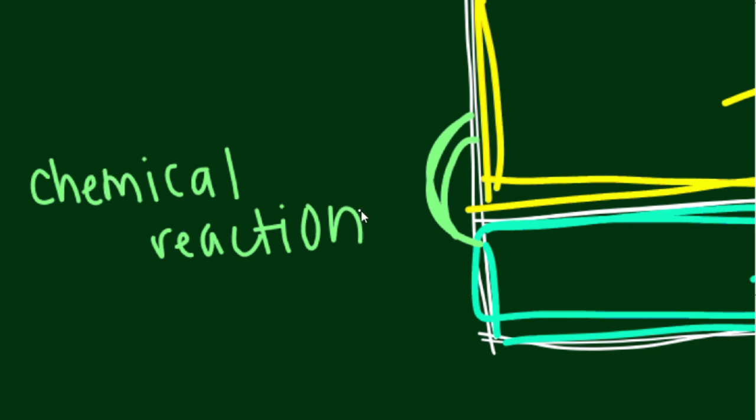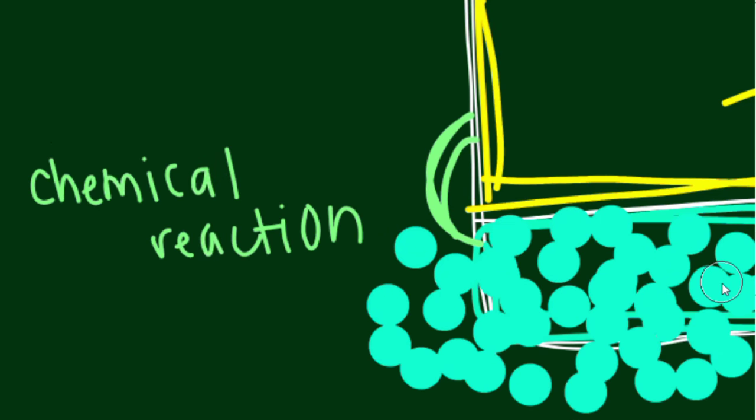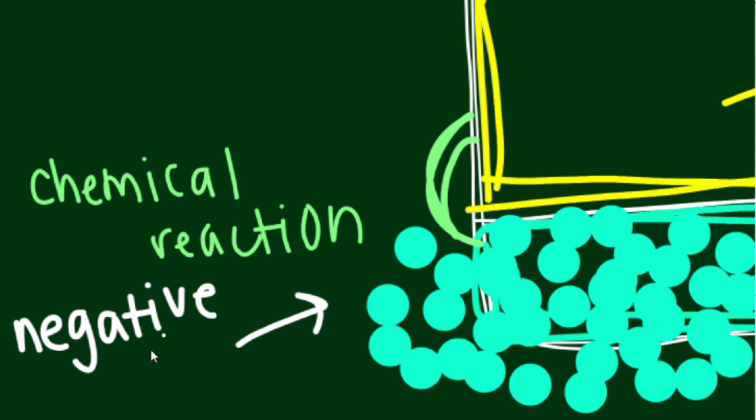Ions in the electrolyte react with atoms in the anode, resulting in a buildup of electrons. These unbalanced electrons cause the anode to be negative.